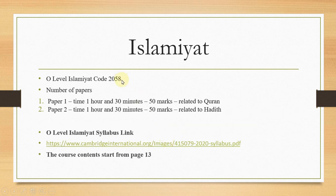Islamiyat code is 2058. There are two papers, time for both is one hour 30 minutes each, marks are the same. Paper 1 is totally related to Quran and Paper 2 is totally related to Hadith. The syllabus starts from page 13.